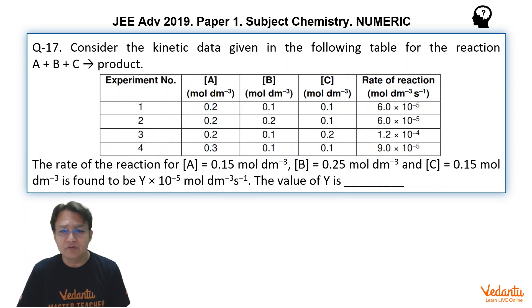Similarly, if we see the fourth one, the concentration of A is changed to 0.3, and concentration of B and C is still 0.1, 0.1. And here, the concentration of A is changed from 0.2 to 0.3, and see the effect on the rate.